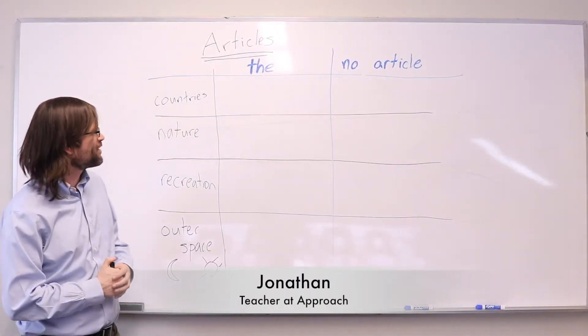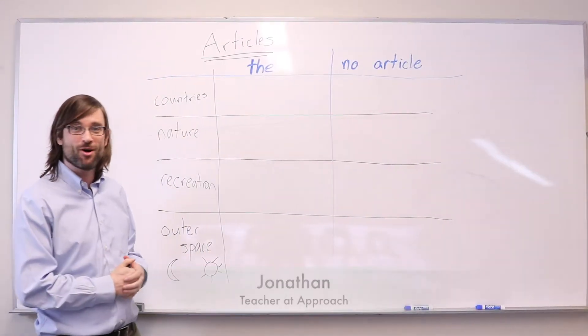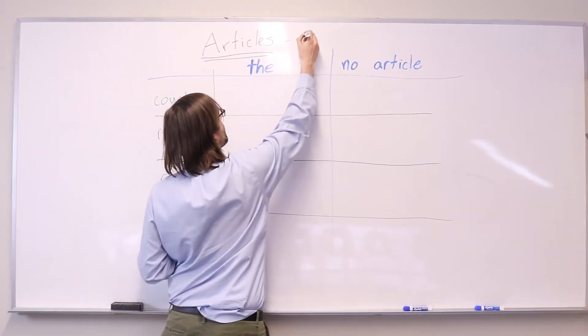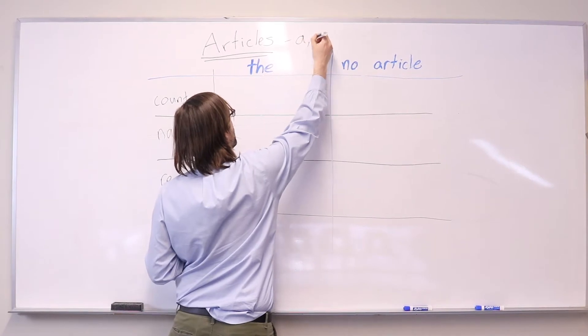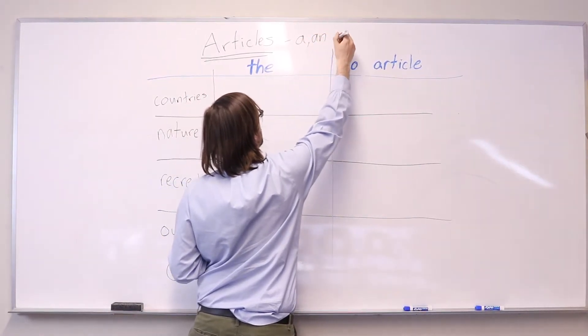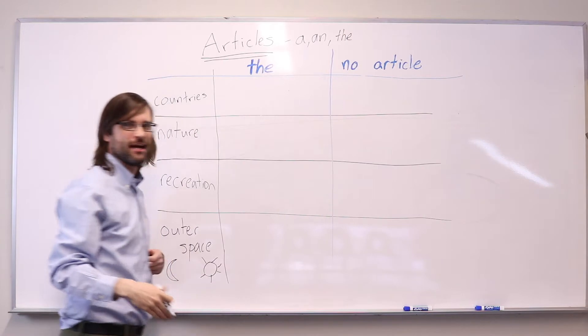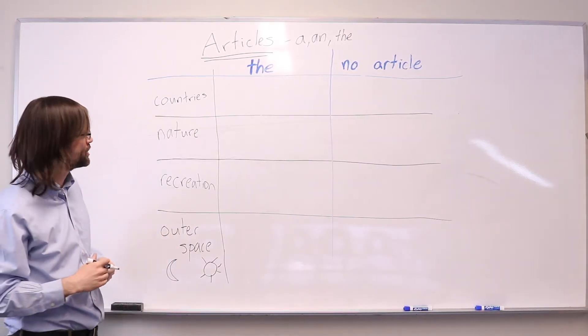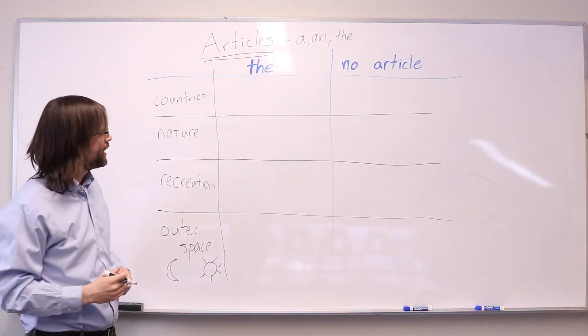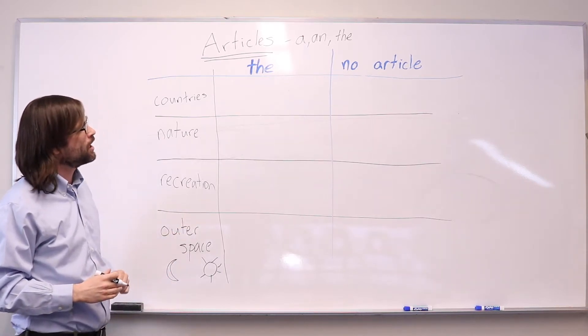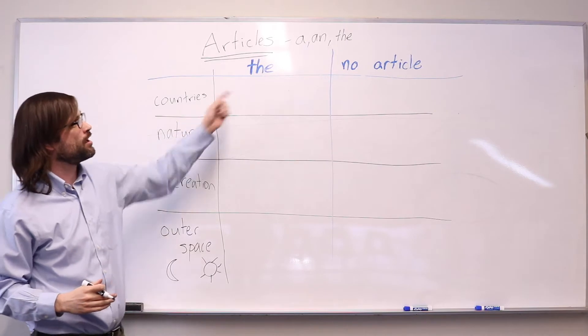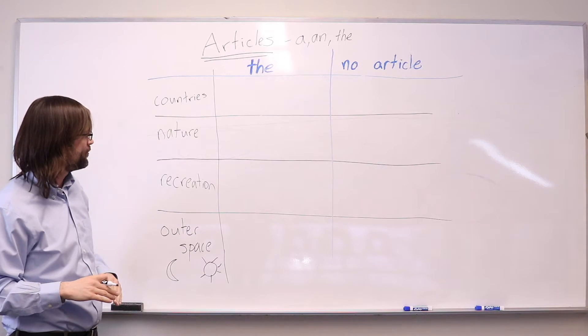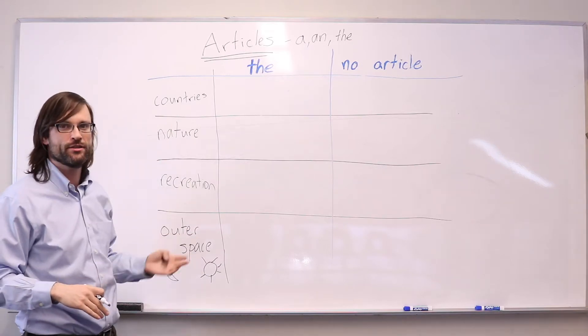Oh, hello. I was just preparing my class. Today I'm going to talk about articles. Articles, if you don't remember, are these little words a, an, and the, which are types of determiners used in front of nouns in English. This is a very big topic. So I'm only going to focus on the difference between the and no article, not using any article at all, for some areas where students are often confused.